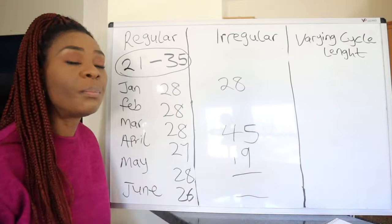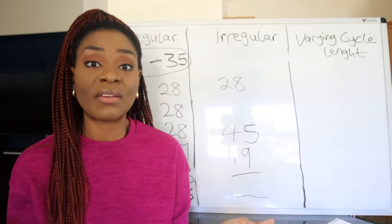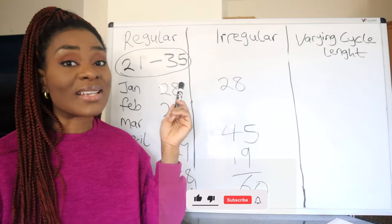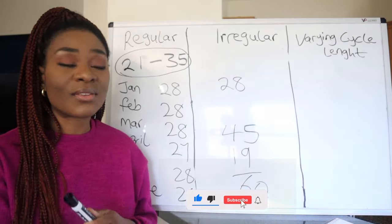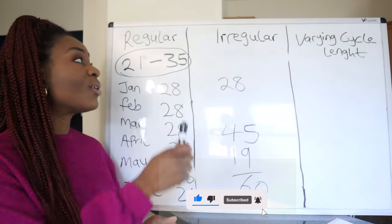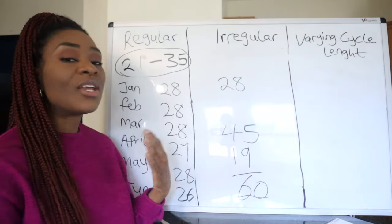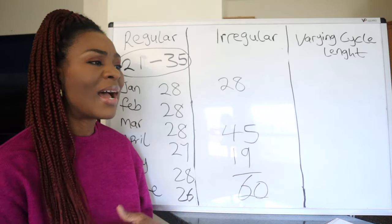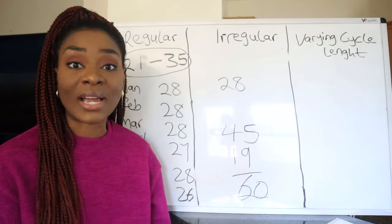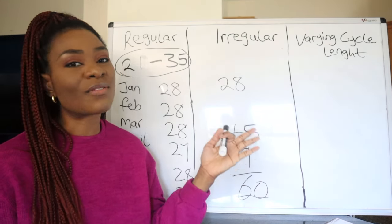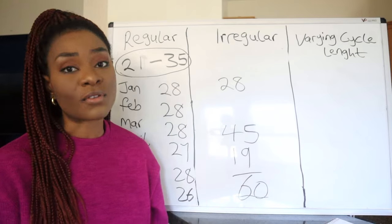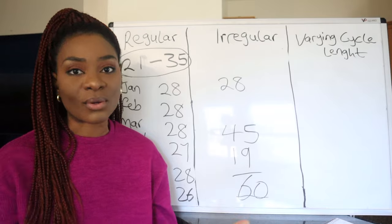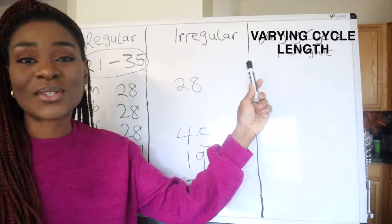In May no period, in June no period — your period just disappears and shows up whenever it likes, sometimes very early, sometimes very late. This is an irregular cycle: it goes below 21 and above 35, making it very difficult to predict your next period or calculate ovulation. This is very frustrating if you're trying to conceive, and you'll want to see a doctor.